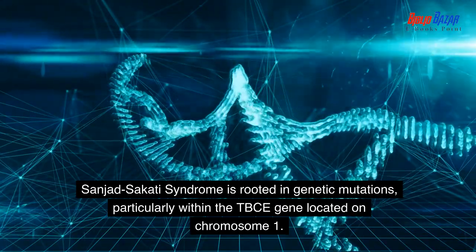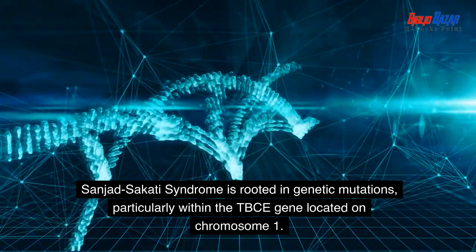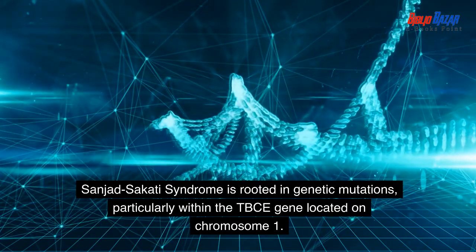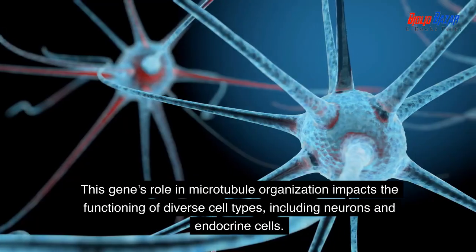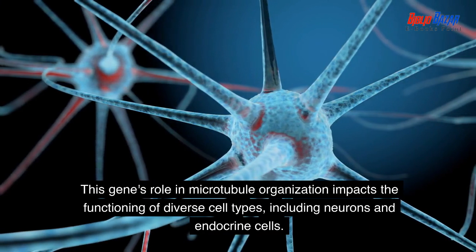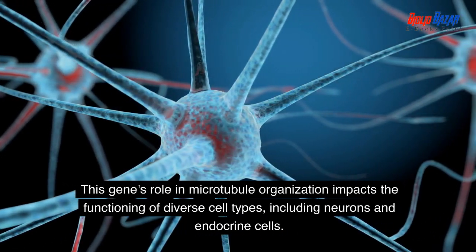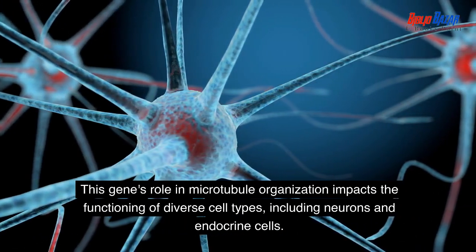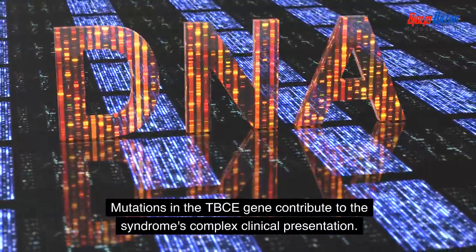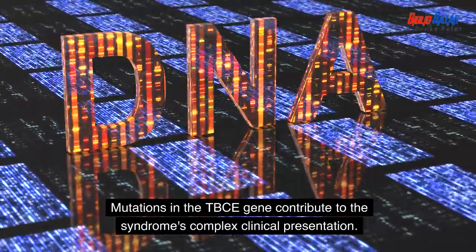Sanjad Sakati Syndrome is rooted in genetic mutations, particularly within the TBCE gene located on chromosome 1. This gene's role in microtubule organization impacts the functioning of diverse cell types, including neurons and endocrine cells. Mutations in the TBCE gene contribute to the syndrome's complex clinical presentation.